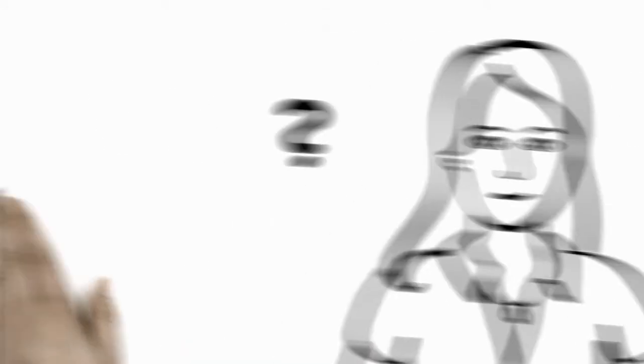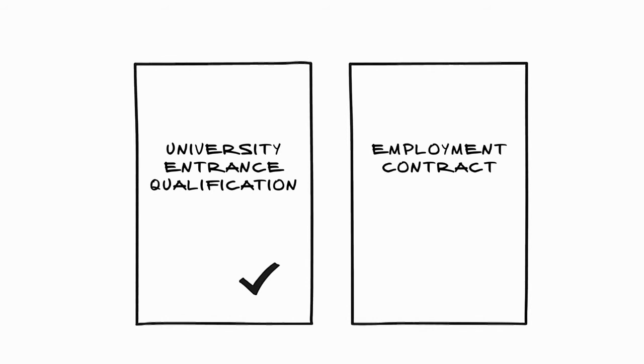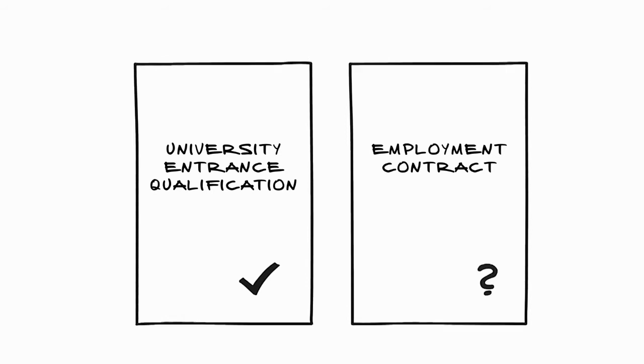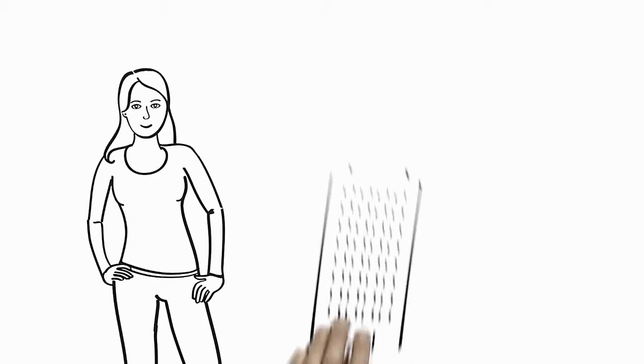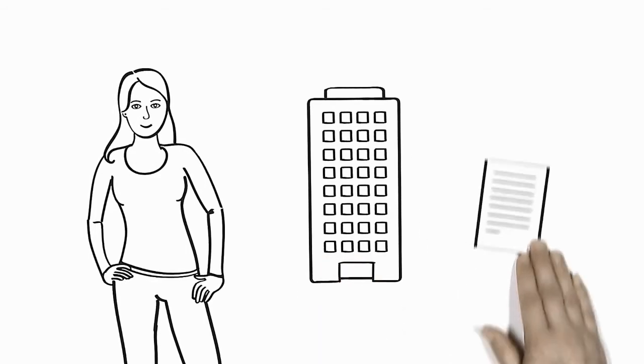To study at the DHBW, she needs a good grade in her final exam at school and a training contract with the company. Okay, as the places on the course are provided by companies, Lillian also has to apply to them for a dual degree course.